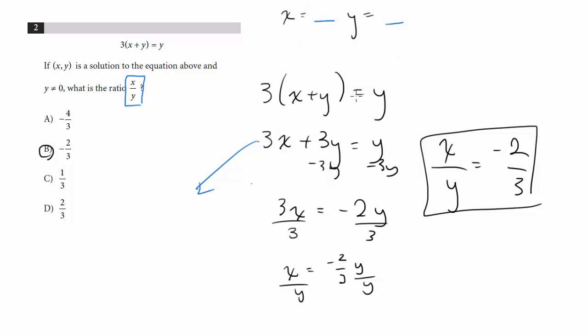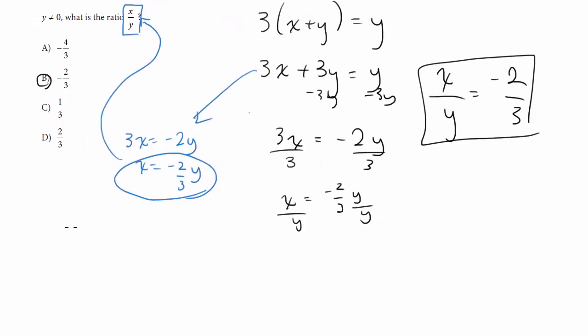What you could do is to solve for 3x equals negative 2y. And then x is equal to negative 2 thirds y. And then you could substitute that in here. So x over y equals, substitute this in, negative 2 thirds y over y.